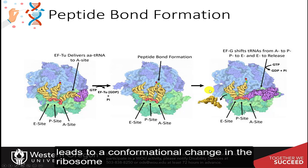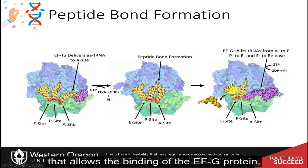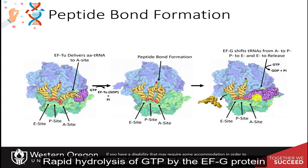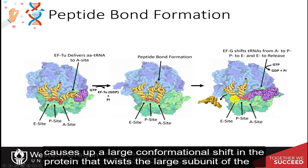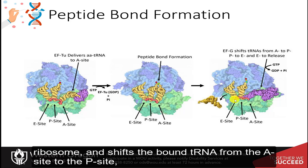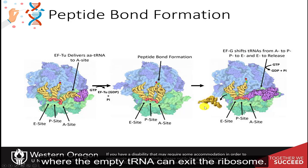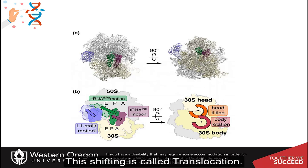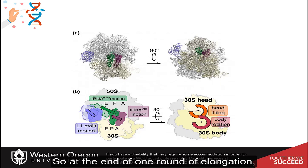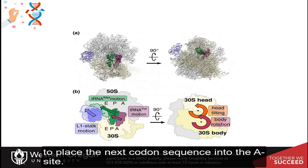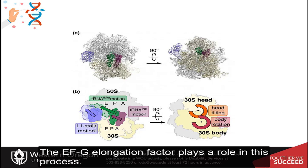Peptide bond formation leads to a conformational change in the ribosome that allows the binding of the EFG protein when it is bound to GTP, near the A site of the ribosome. Rapid hydrolysis of GTP by the EFG protein causes a large conformational shift that twists the large subunit of the ribosome and shifts the bound tRNAs from the A site to the P site and from the P site to the E site, where the empty tRNA can exit the ribosome. This shifting is called translocation. The EFG elongation factor plays a key role in this process.